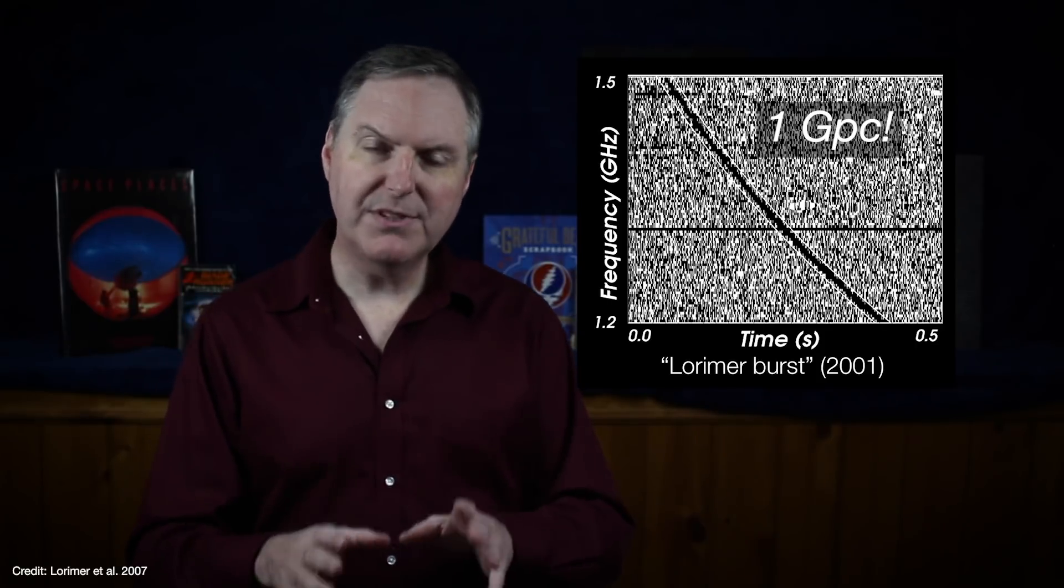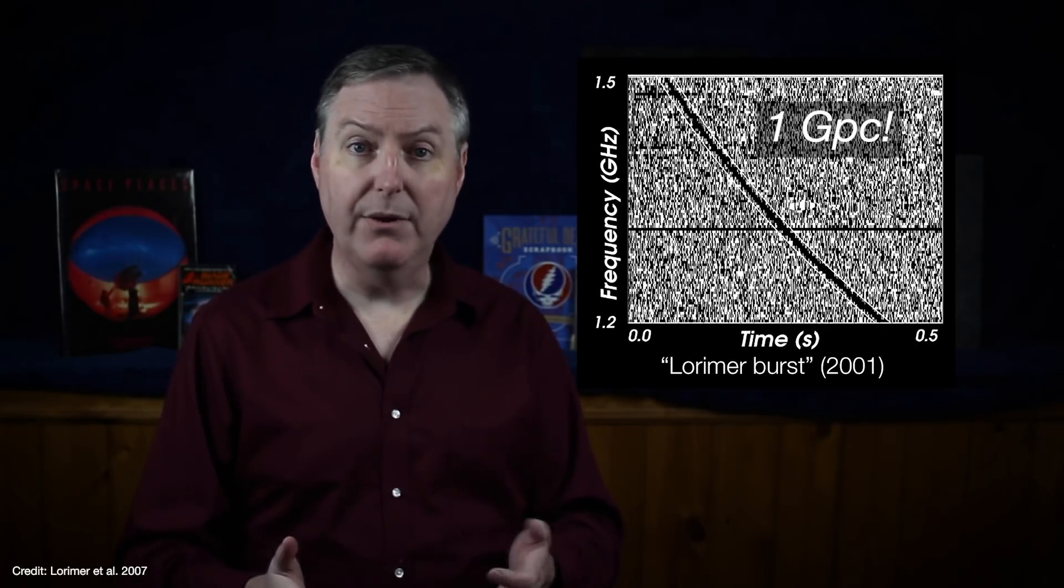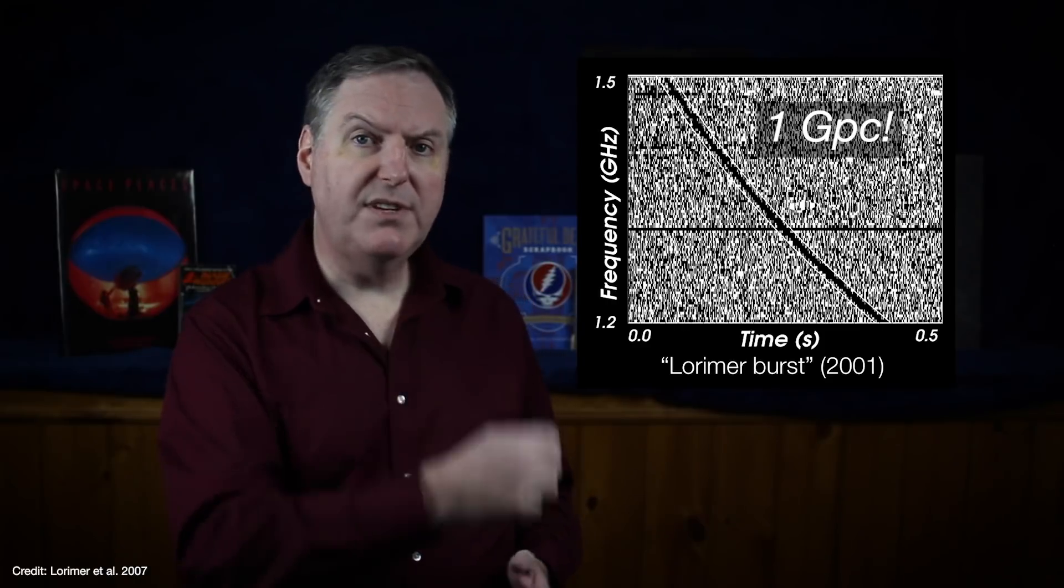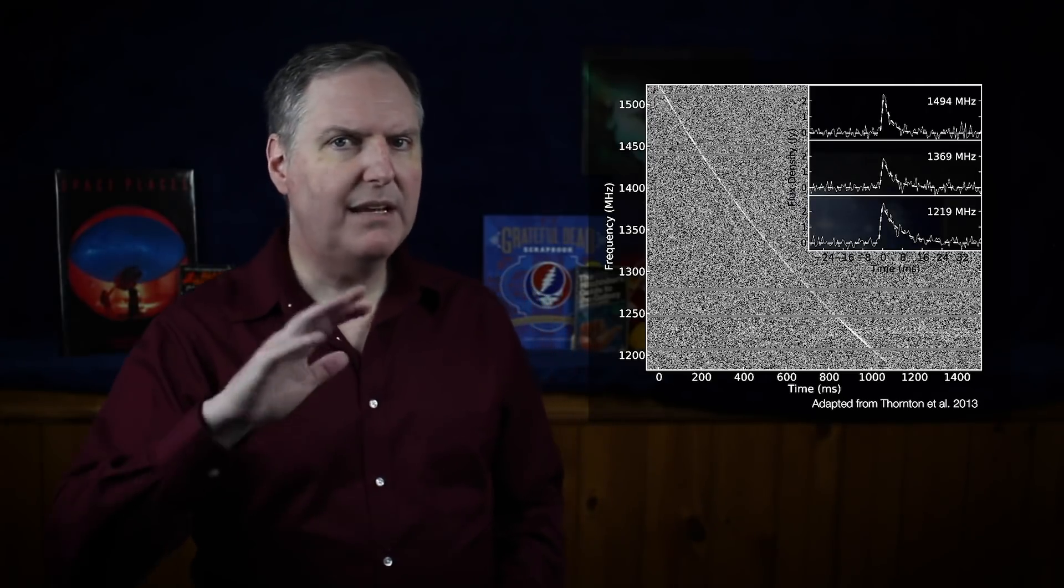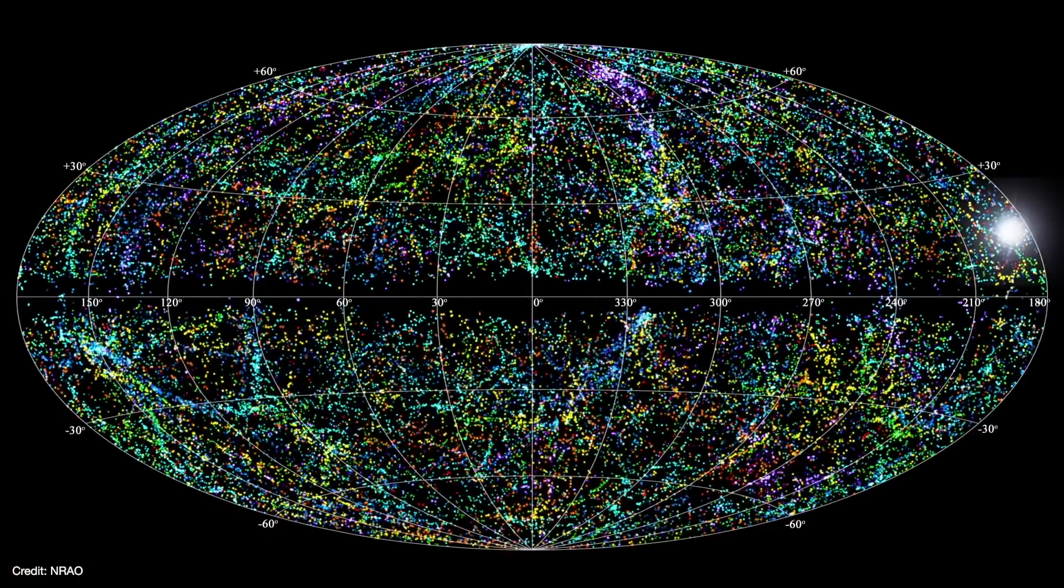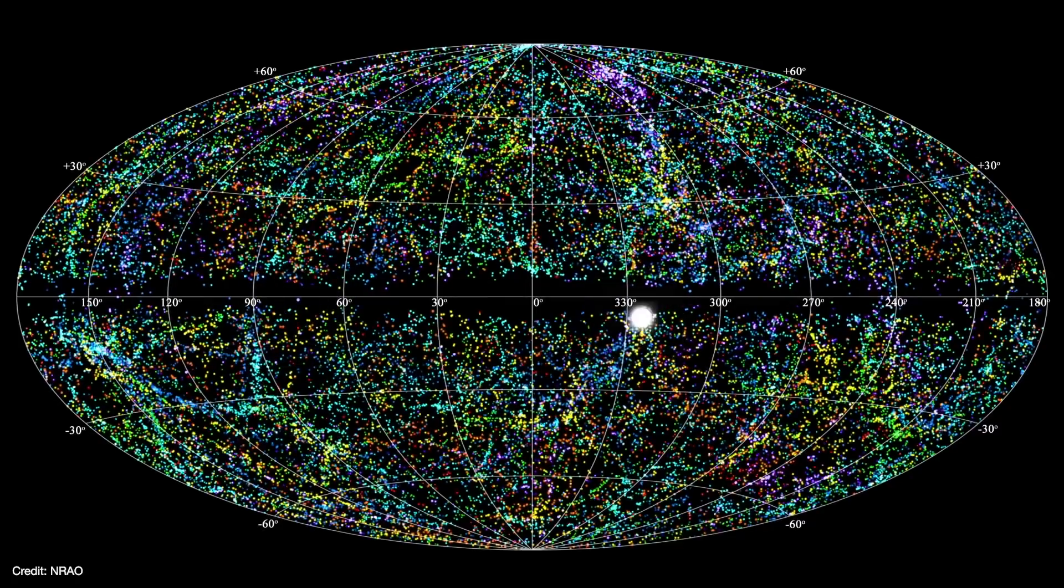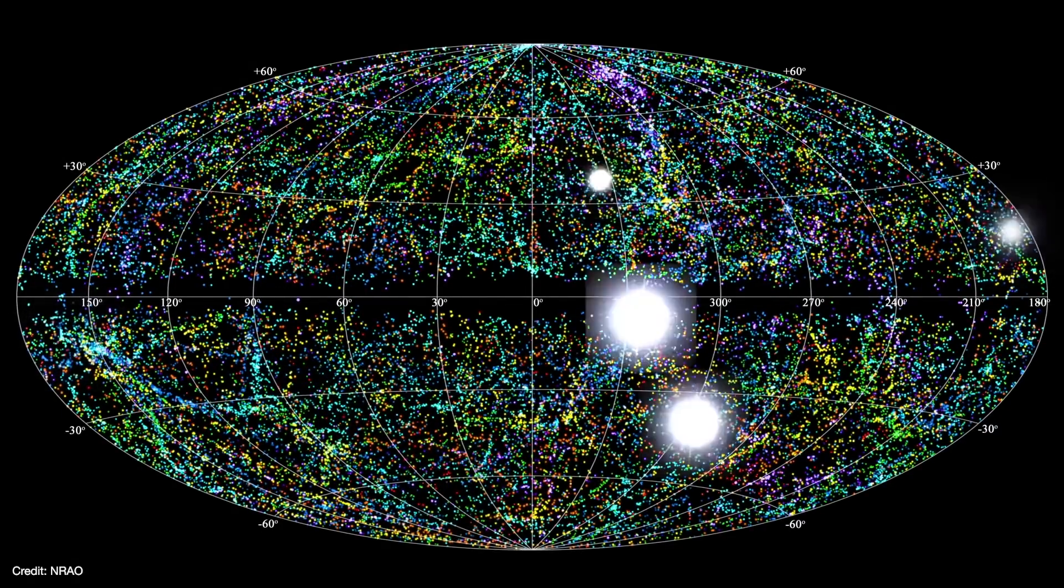For several years, the Lorimer burst, as it came to be known, remained the only known signal of its kind. Then in 2013, another team reported four more FRB detections in Parkes archival data. Now, even though only a handful of FRBs had been discovered, it was already very clear that these had to be going off everywhere all the time in order to just be picked up by accident. Estimates ranged around 2,500 to as many as 10,000 bursts a day. That's more than one burst every minute.